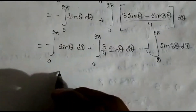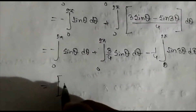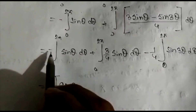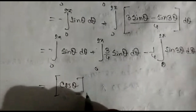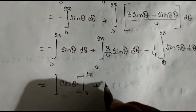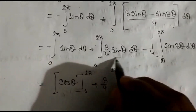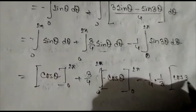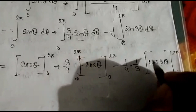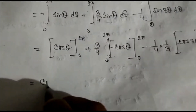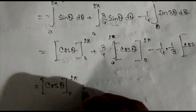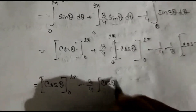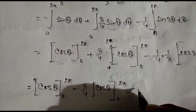Integrating sin θ gives −cos θ, and integrating sin 3θ gives (1/3)cos 3θ. So the result is: −cos θ from 0 to 2π, plus (3/4)(−cos θ) from 0 to 2π, minus (1/12)cos 3θ from 0 to 2π.